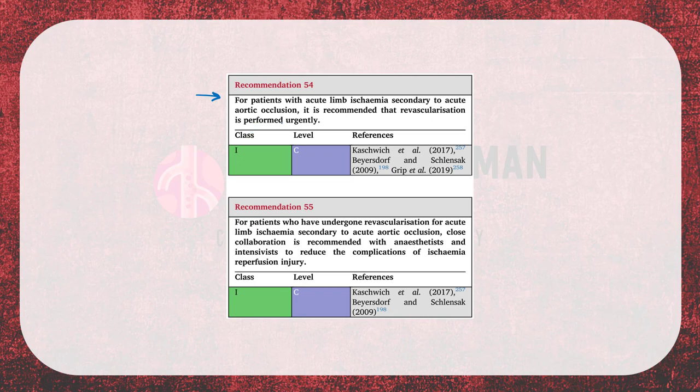The recommendations for acute aortic occlusion: for patients with acute limb ischemia secondary to acute aortic occlusion, it is recommended that revascularization is performed urgently. For patients who have undergone revascularization, close collaboration is recommended with anesthetists and intensivists to reduce the complications of ischemia-reperfusion injury.